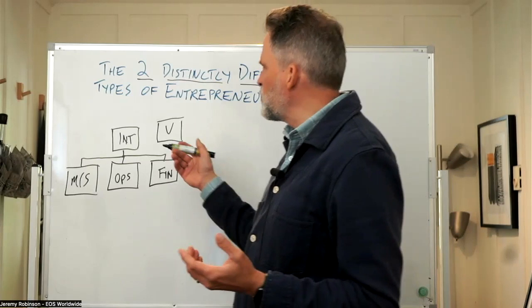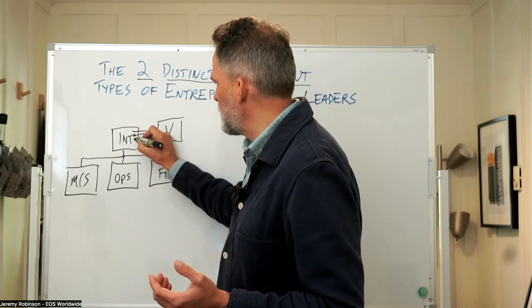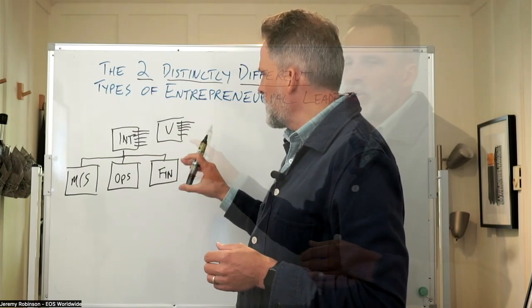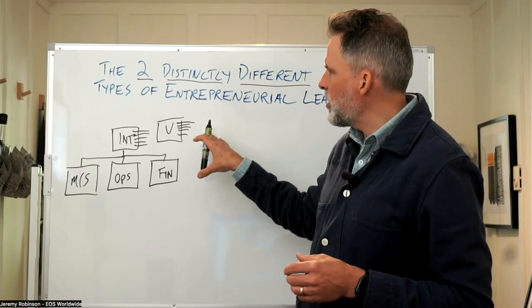One issue arises when you don't have these two leadership roles clearly defined. So you've got to do that. You've got to define, just at a high level, what are the five main roles of the integrator and the five main roles of the visionary. Make sure those are crystal clear and distinct. For a visionary, he or she doesn't have anyone reporting to them on the accountability chart, so you can build their seat around their unique ability.